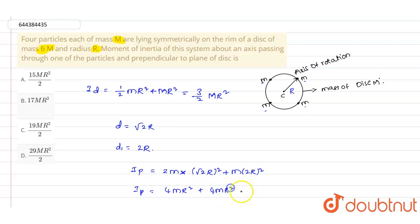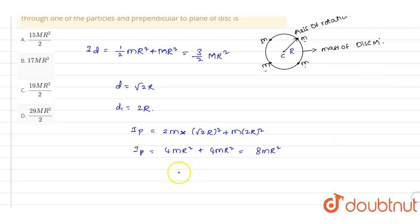equals 8mR². This is the value of I_p. And now the moment of inertia of the combined system can be written as I = I_p + I_d.